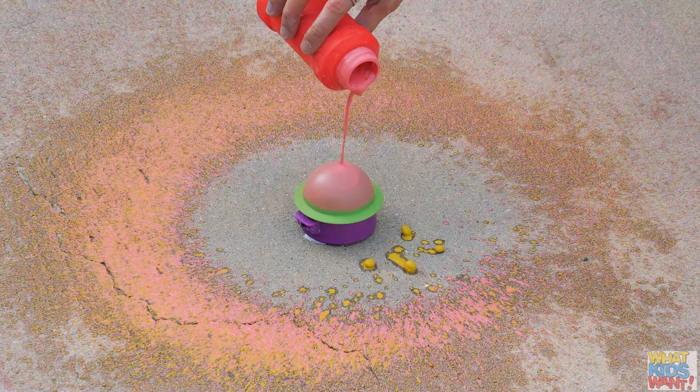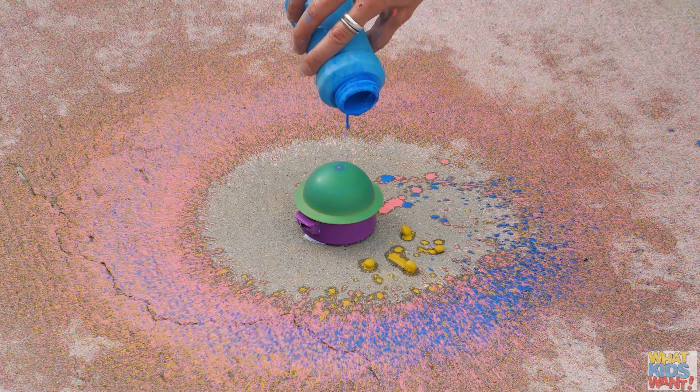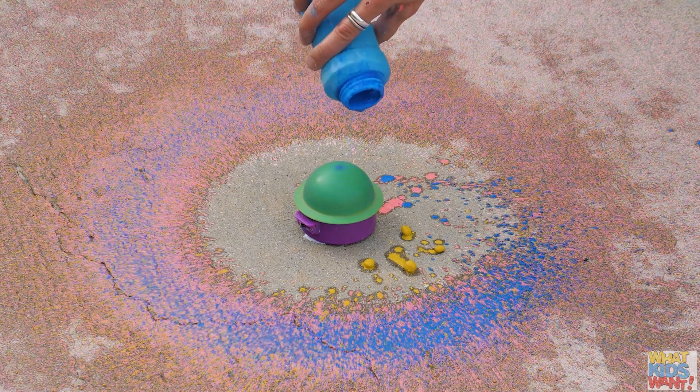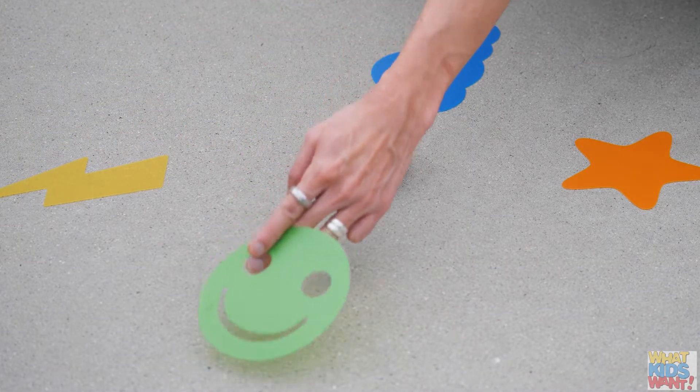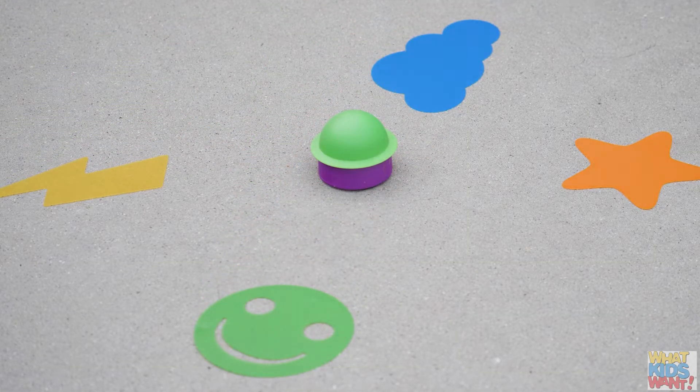Pour other colors of paint on the chalk spinner for a multi-colored pattern. Place the stencils on the ground prior to pouring the paint on the chalk spinner to add fun shapes to your creations.